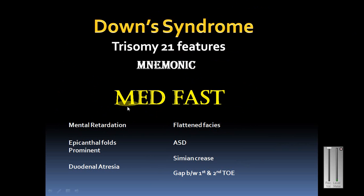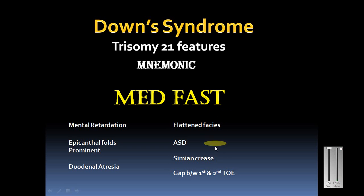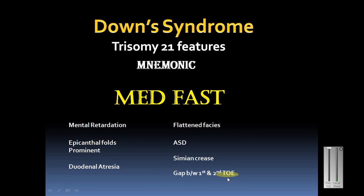MEDFAST stands for: M — mental retardation; E — epicanthal folds, prominent; D — duodenal atresia; F — flattened facies; A — atrial septal defect; S — simian crease; T — gap between the first and second toe, which is prominent in these cases. This is how you can remember all the features of Down syndrome.